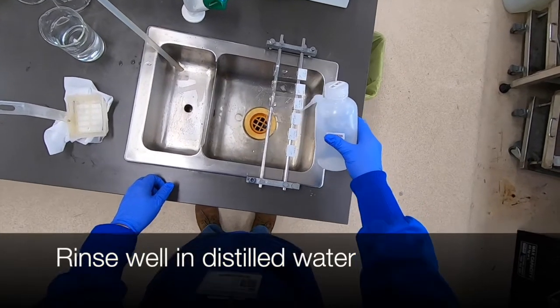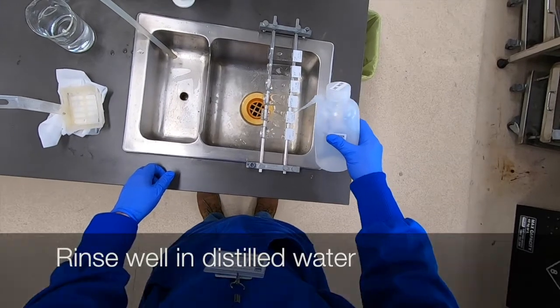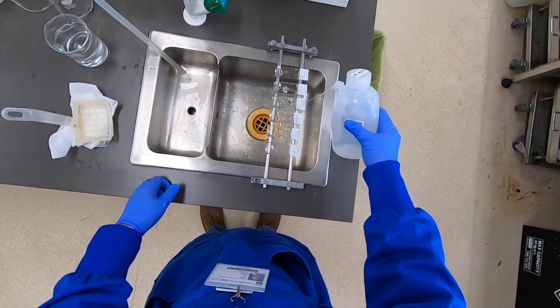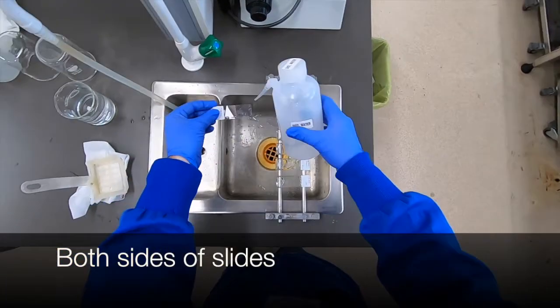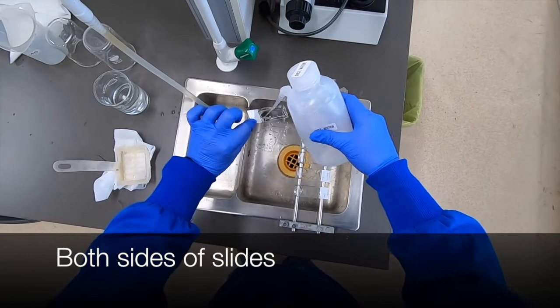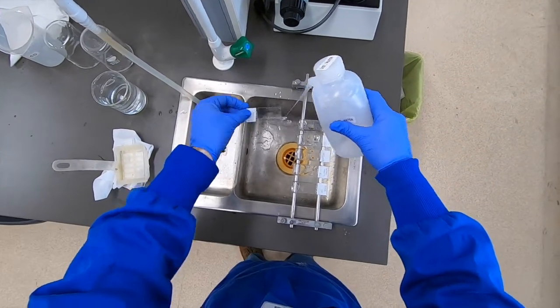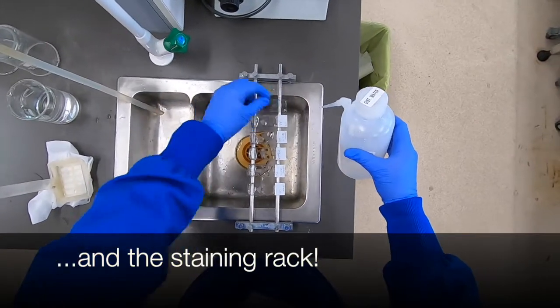We then give them a thorough rinse in deionized water. And you often need to go back and fill up your bottle a couple of times to really make sure that the slides are really nicely rinsed. Both sides because of course the water can be on the other side of the slide as well. And then we also give the staining rack a really good rinse as well.